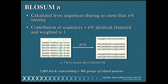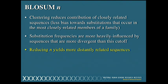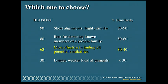The implications of this clustering: it reduces the contribution of closely related sequences, giving us less bias towards substitutions in closely related family members. The take-home message is that reducing N yields more distantly related sequences — so your cheat sheet for the day: a lower BLOSUM number incorporates sequences that are more distant from one another.